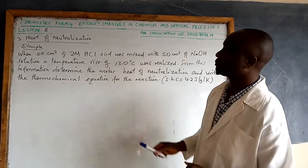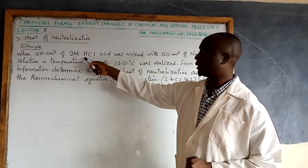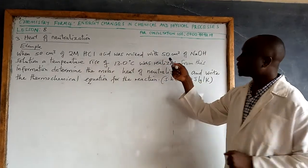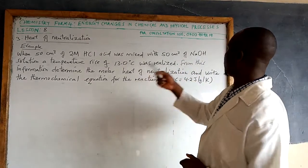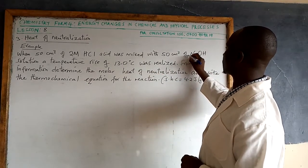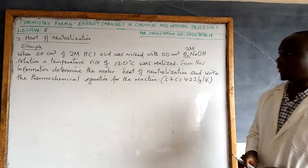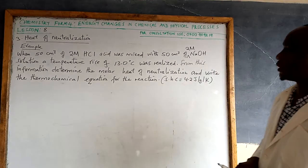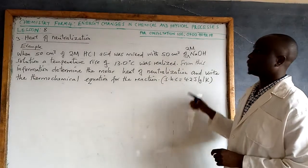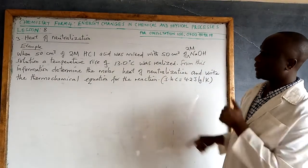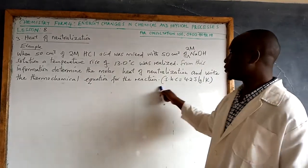So we have an example here. When 50 cm³ of 2 molar hydrochloric acid was mixed with 50 cm³ of 2 molar sodium hydroxide solution, a temperature rise of 13.0 degrees Celsius was realized. From this information, determine the molar heat of neutralization and write the thermochemical equation for the reaction.